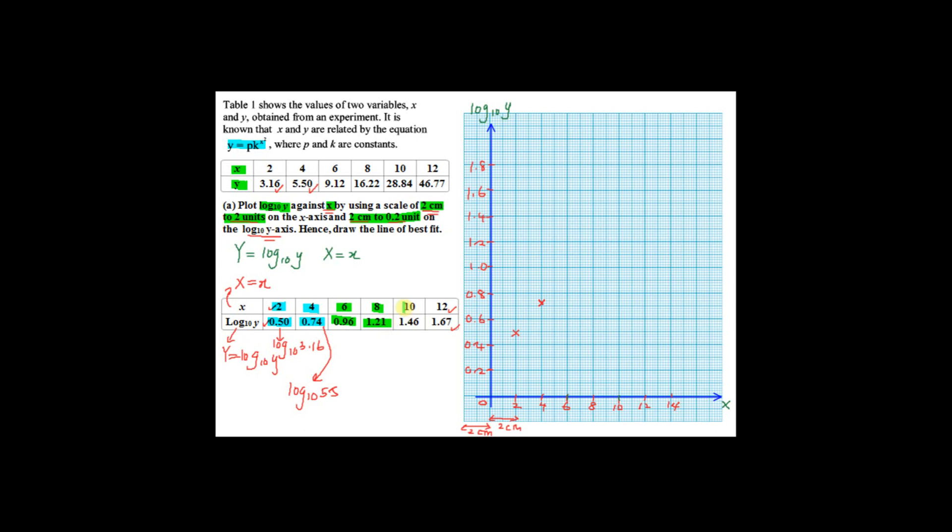8, 1.21, 10, 1.46, and 12, 1.67. So now all the 6 points here have been plotted. The first point, second point, third, fourth, fifth, and sixth.